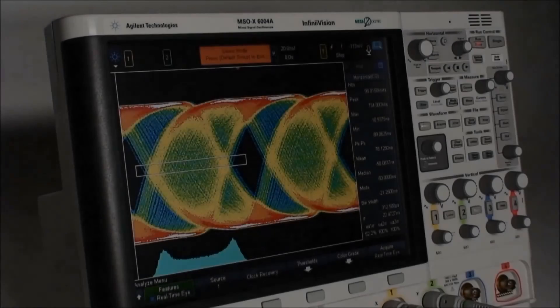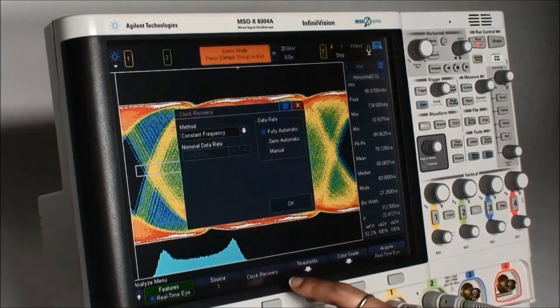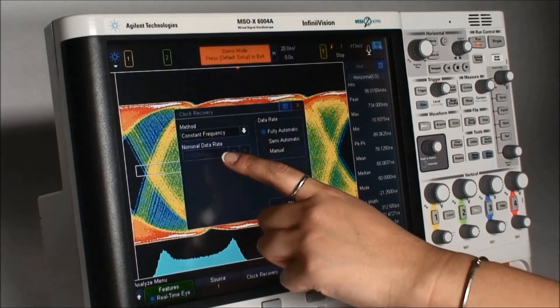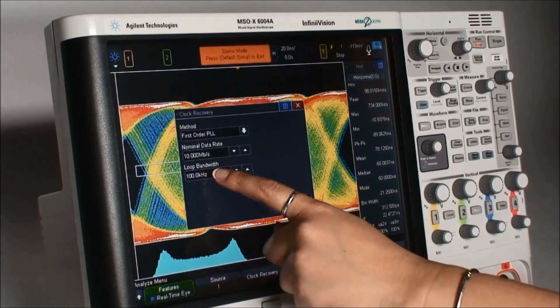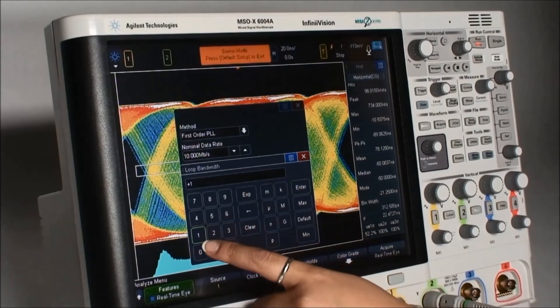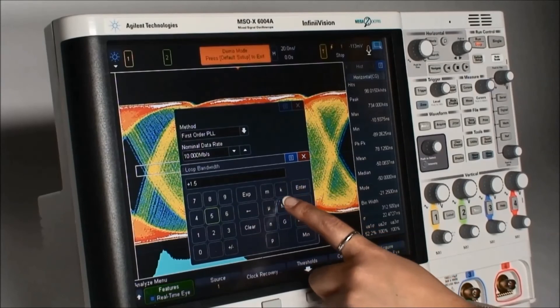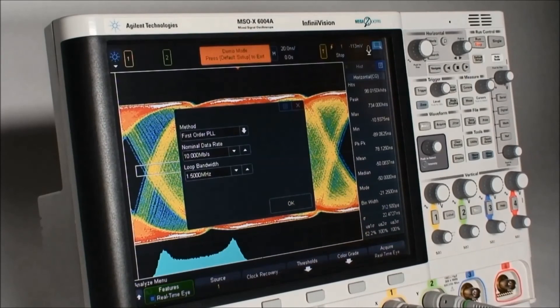Let's change the clock recovery to a PLL to try and filter out this jitter. This particular signal has a speed of 10 megabits per second, and from our first measurement we determined the frequency of the jitter was about 100 kHz. We could set the bandwidth loop to 1.5 MHz to ensure we have filtered out the sinusoidal jitter and all of its higher harmonics.